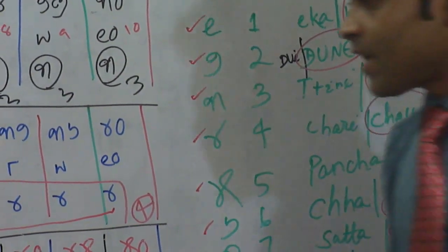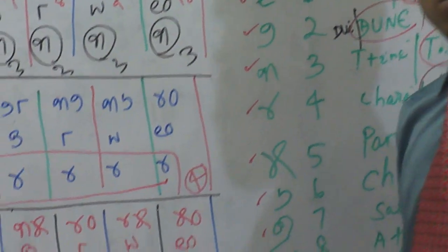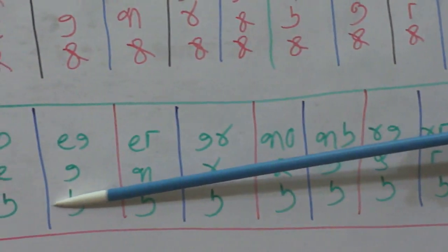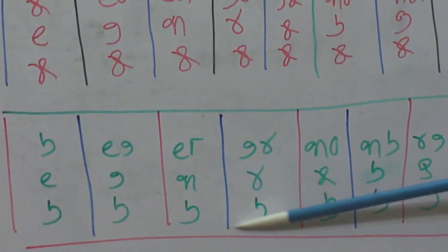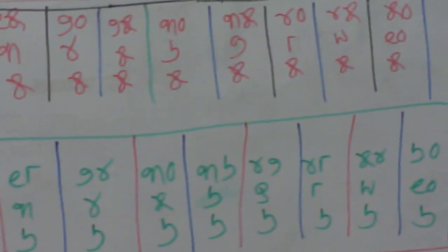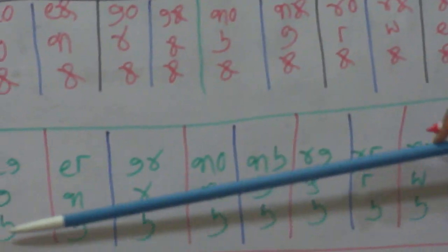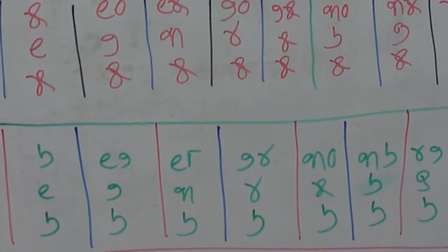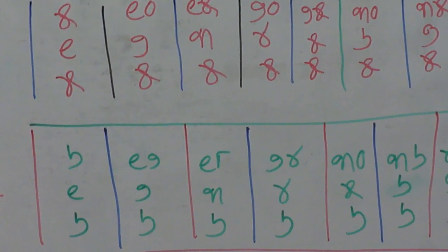So let's see another table: the six table. These are sixes. 'Chha, chha, chha' — all these are 'chha', meaning six. So 'chha' as usual — all these represent six.